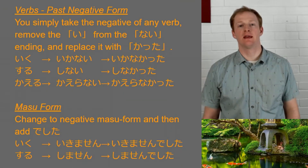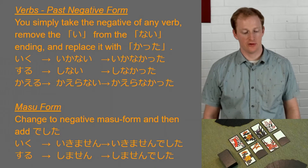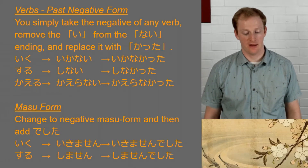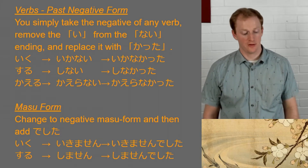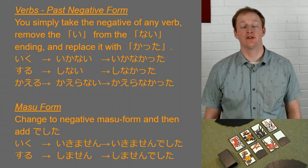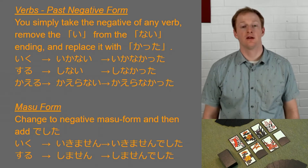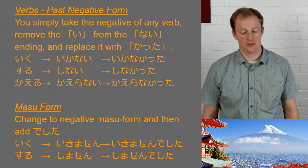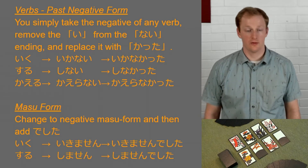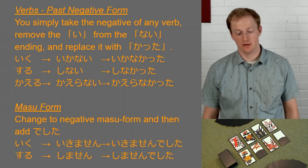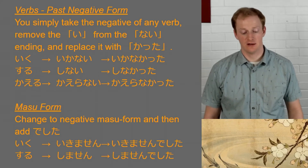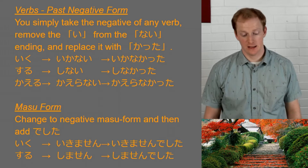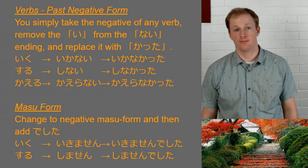Finally, we're looking at negative past for all verbs. Take the negative plain form, remove the i from the final nai, and replace it with katta. So iku → ikanai (negative) → ikanakatta, meaning 'didn't go.' Similarly, suru → shinai → shinakatta, meaning 'didn't do.' And kaeru → kaeranai → kaeranakatta, meaning 'didn't go home.'